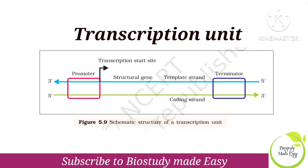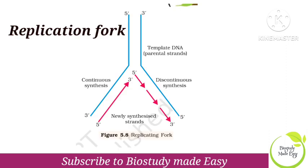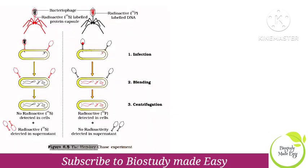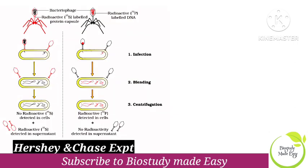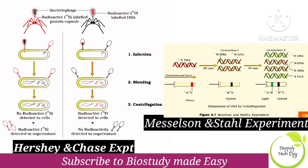The next diagram is very important — Transcription Unit, so 3 marks. This diagram is very important. We also have to do replication — 3 marks. Then you have to do Hershey and Chase experiments, and then Meselson and Stahl experiments. These all experiments are very important.